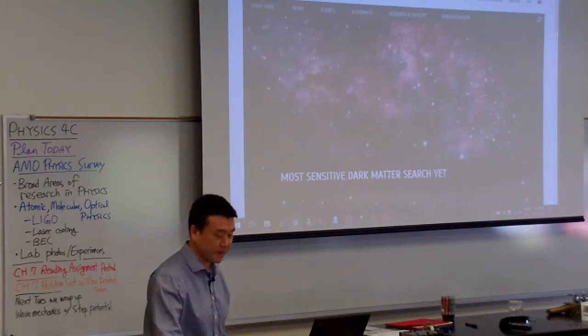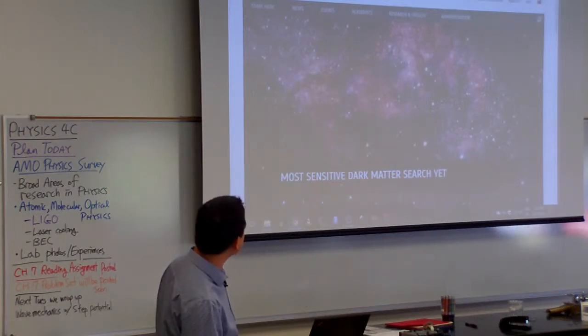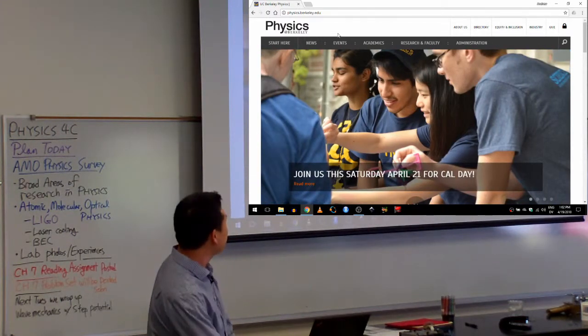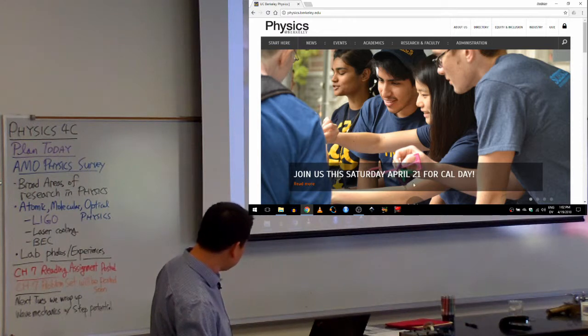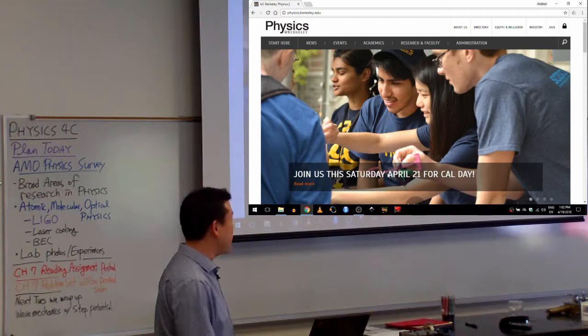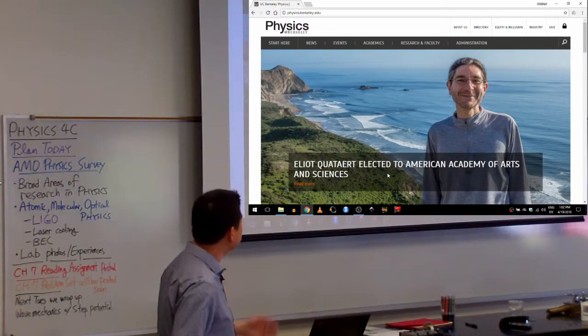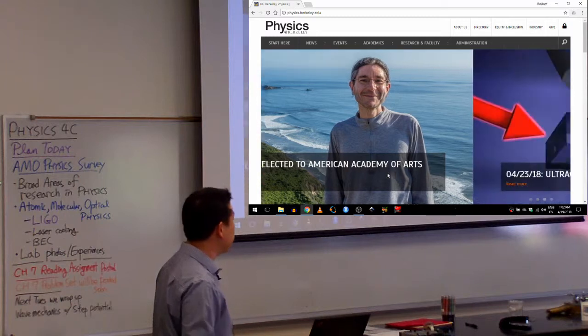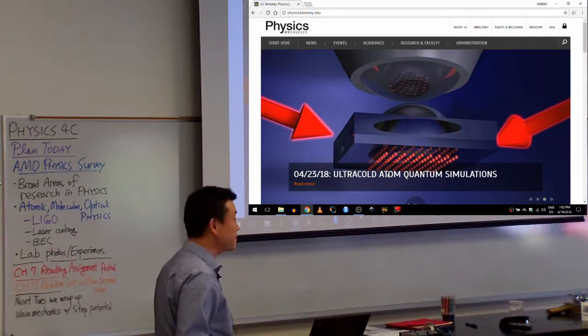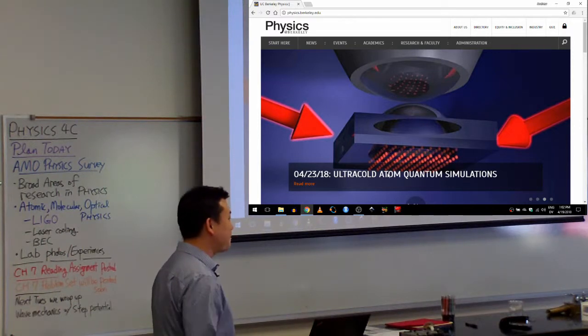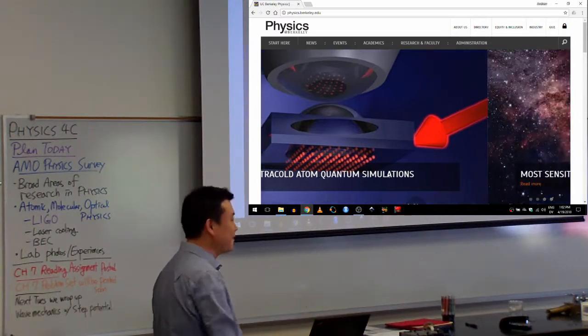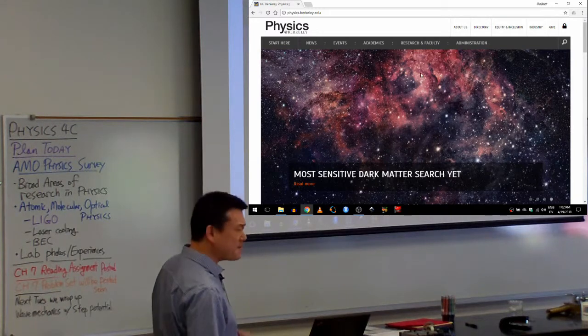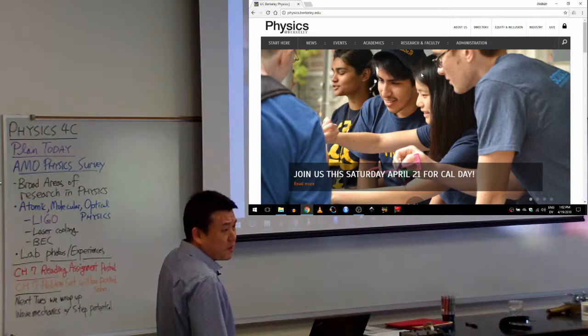So this is the Berkeley physics website. You can use the website of almost any research university. I use this one because I know the people there better. They are holding Cal Day this Saturday. Whether you are going to Berkeley or not, it's a good opportunity to see what kind of things people do at a research university. It's open house. Many departments have different events scheduled. It's mainly for people who got acceptance letters to Berkeley. They want people to come, look at all the stuff, and actually accept the acceptance letter. But whether you accepted it or not, it's a fun event.